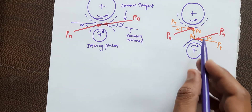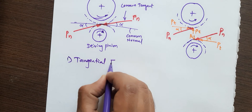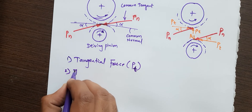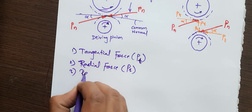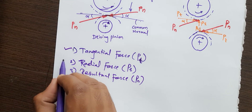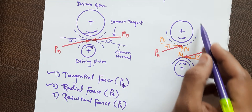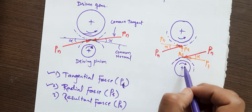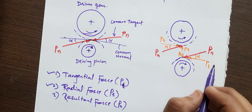The forces acting on the gear and pinion are resolved into two components. The first is the tangential force, denoted PT, and the second is the radial force, denoted PR. The tangential component is responsible for rotating the gear, while the radial component acts towards the centers of the gear and pinion and does not contribute to power transmission. Power is transmitted by the tangential component only.